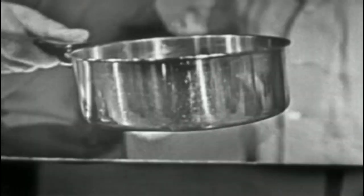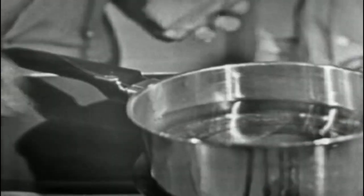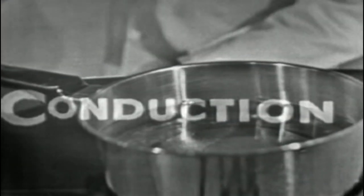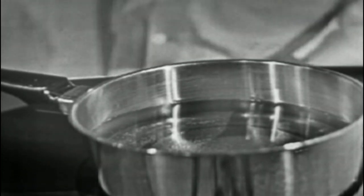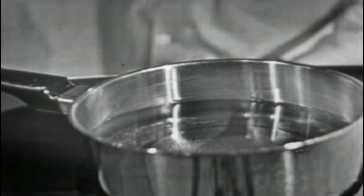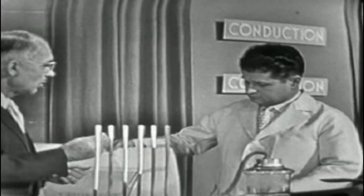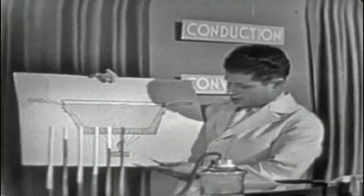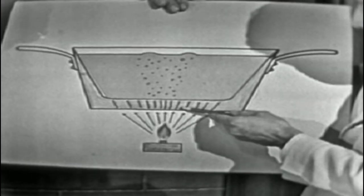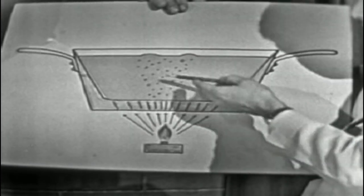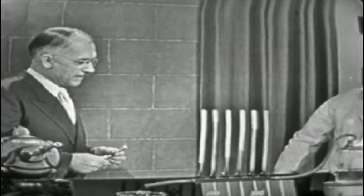To heat anything you have to bring it into contact with something hotter. In this pan of water, a hot flame heats the molecules of the bottom of the pan and sets them vibrating faster; they in turn hit others, and this atomic motion is conducted through the metal to the other side where it heats the water. On our chart, the flame transfers heat to the bottom of the container, and from there by atomic motion into the water — passing on the atomic motion from molecule to molecule.